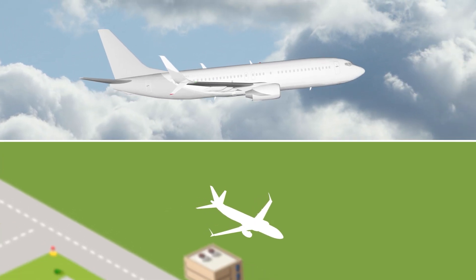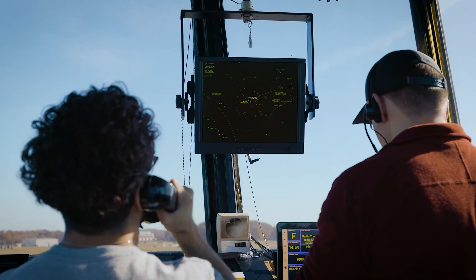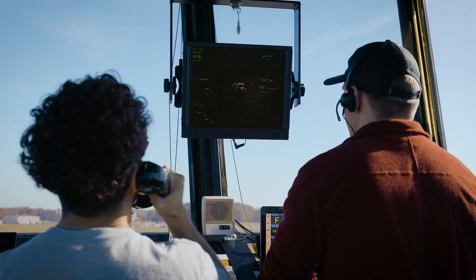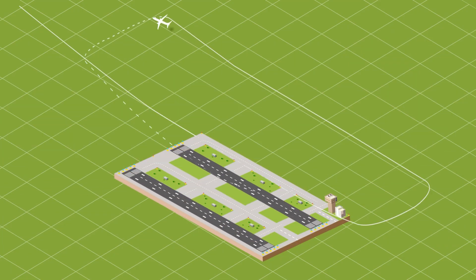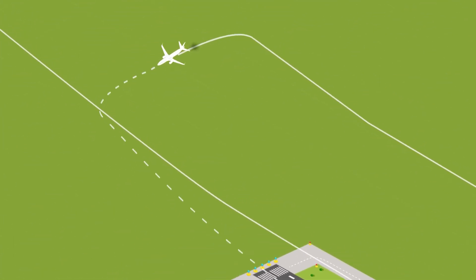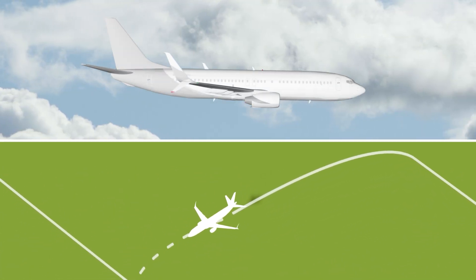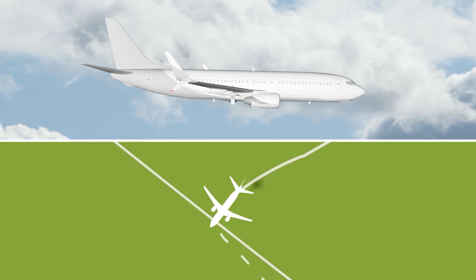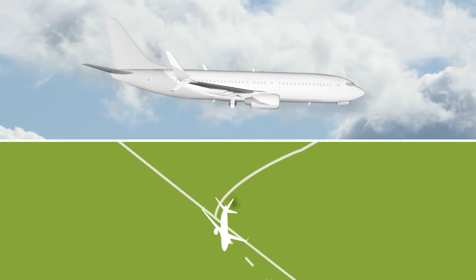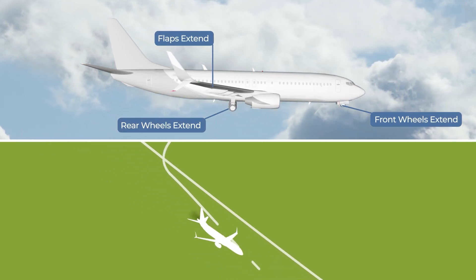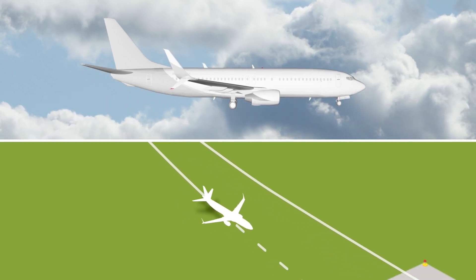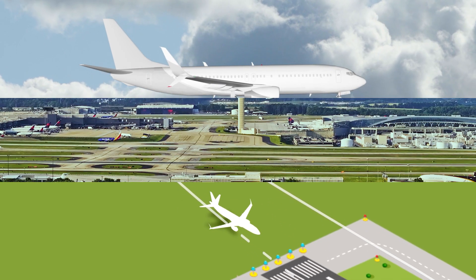The pilot then follows a specific set of instructions from air traffic control or their navigation charts. These instructions are predetermined paths that ensure the aircraft maintains safe separation from obstacles and other air traffic. They typically require climbing to a designated altitude and following specific navigational directions to bring the aircraft back into position for another landing attempt.